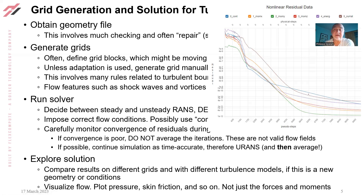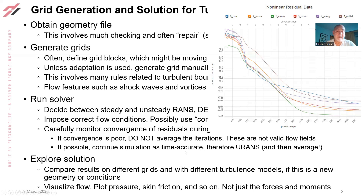If possible, you'd continue that same simulation on that same grid as time-accurate — essentially unsteady RANS — and then average. But often if you try to do that, the time step is so short that you can't get a really good sample.